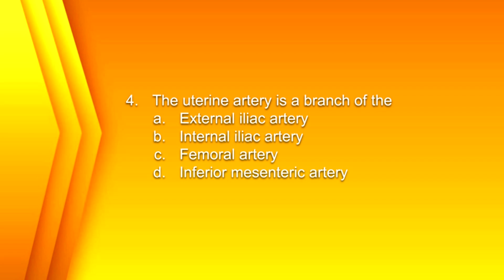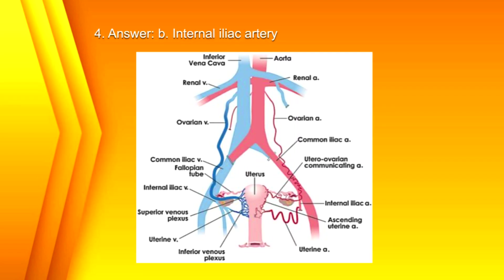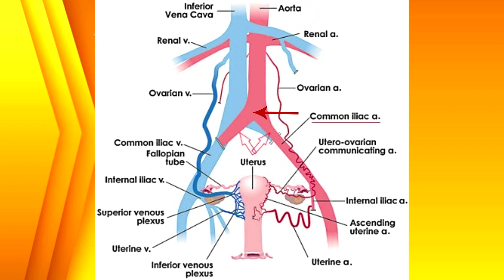Number 4. The uterine artery is a branch of the: A. External iliac artery, B. Internal iliac artery, C. Femoral artery, or D. Inferior mesenteric artery? The answer is B. Internal iliac artery. Here you have the aorta going into the bifurcation of the common iliac arteries bilaterally, then bifurcating into internal and external iliac artery, and off the internal iliac artery you can see the uterine artery.